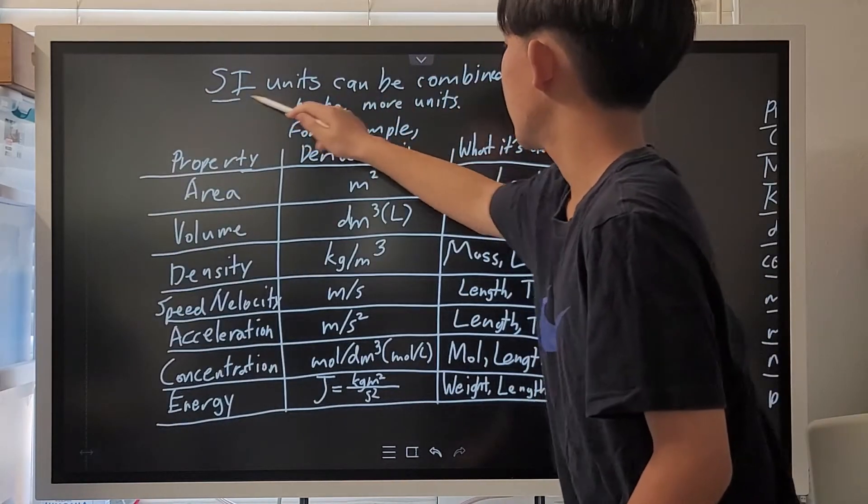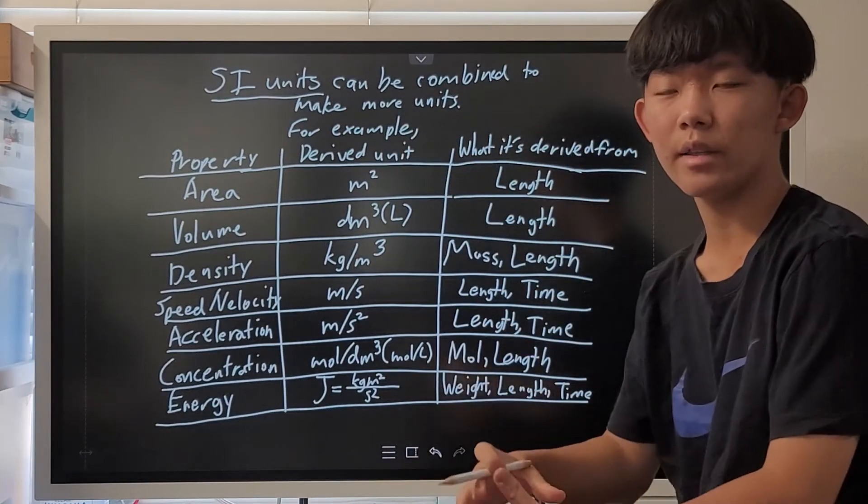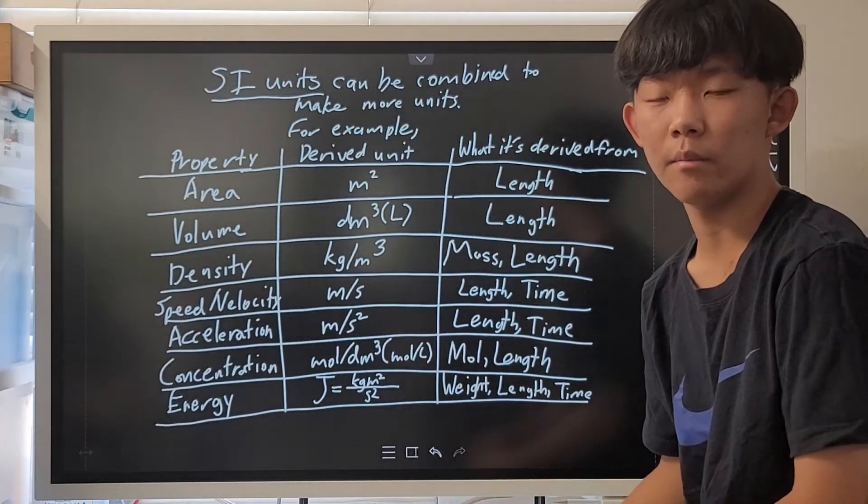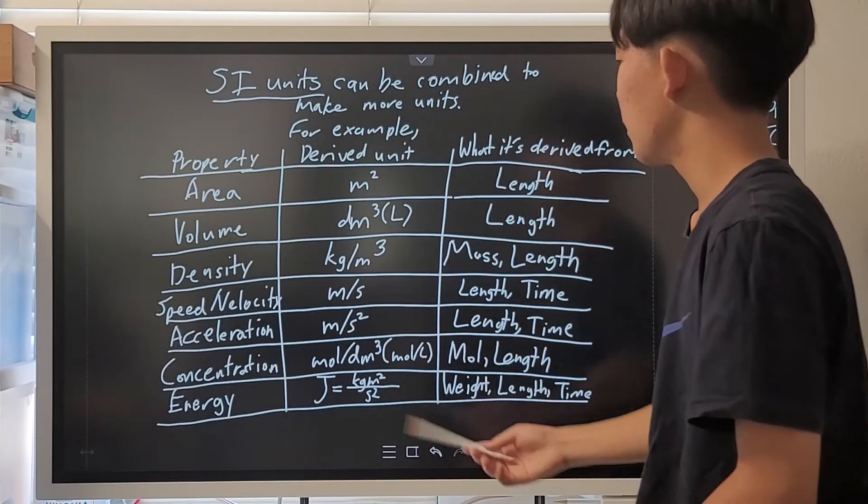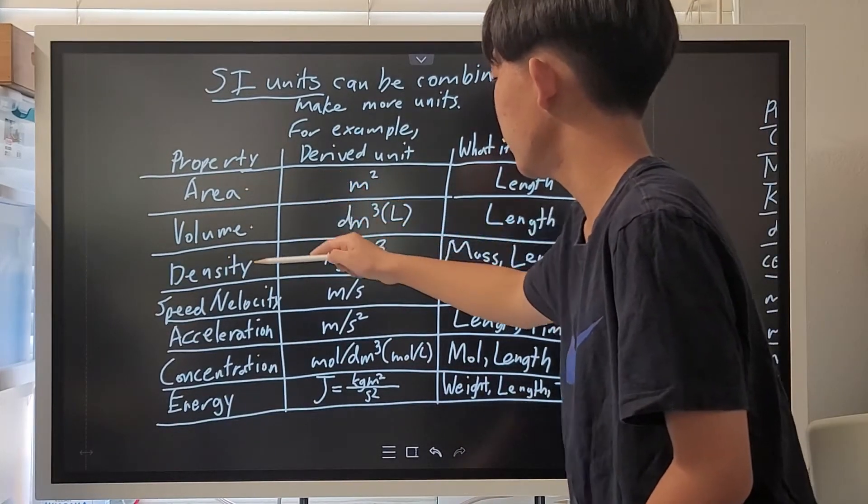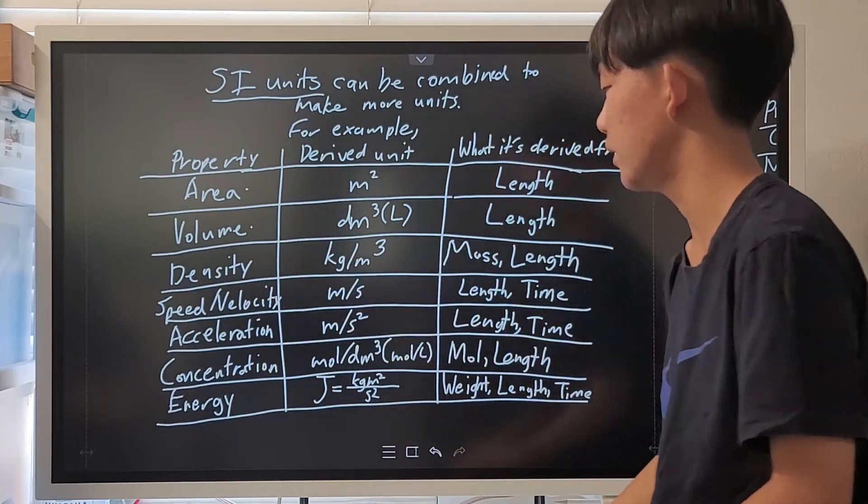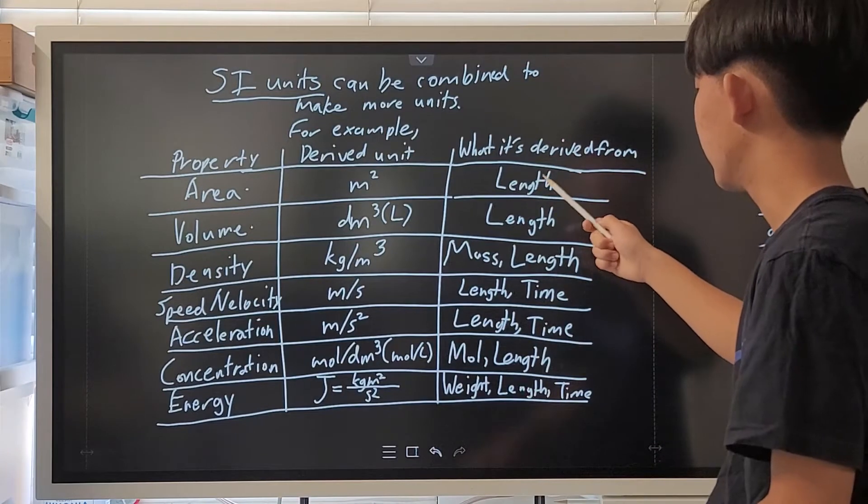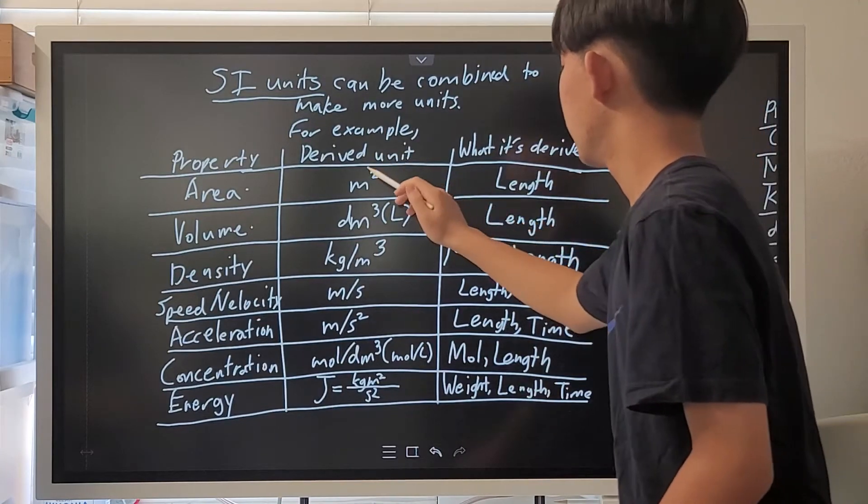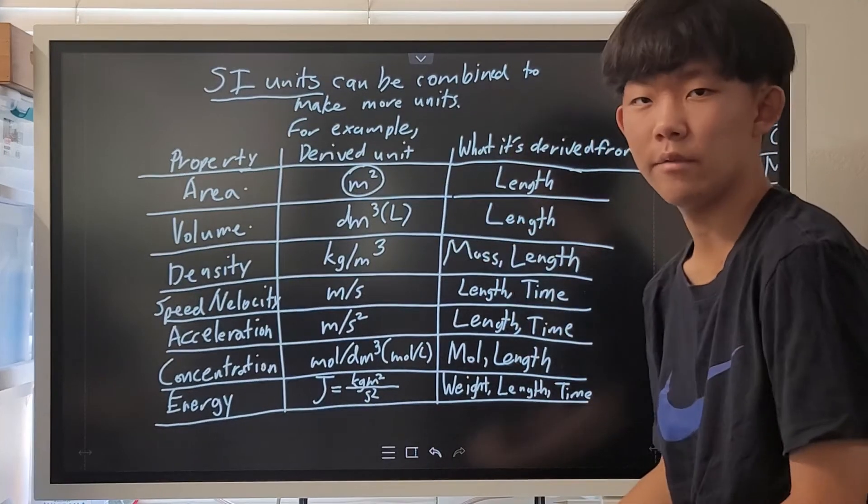However, we can also use SI units and combine them in different ways to make more complex units, and they're called derived units. A bunch of derived quantities include area, volume, density, speed or velocity, etc. And they all derive from something else, like area, such as a meter squared, is derived from the unit length.